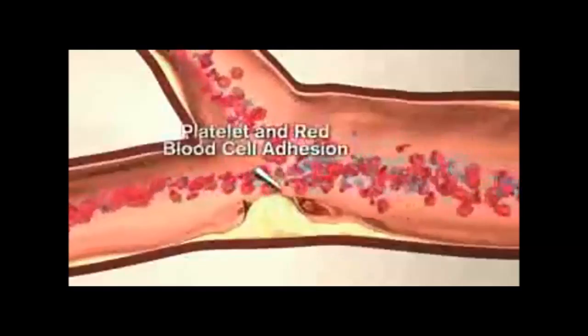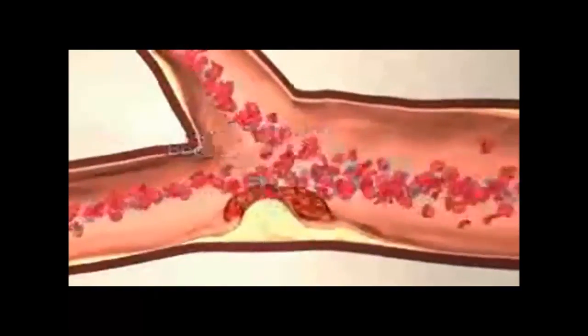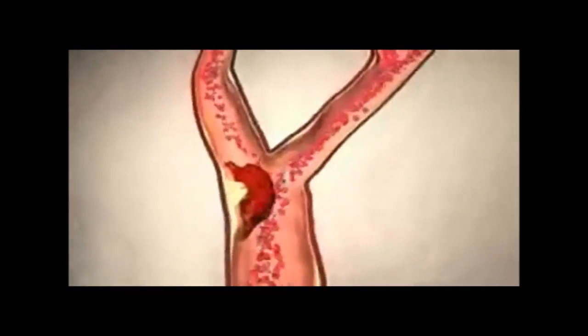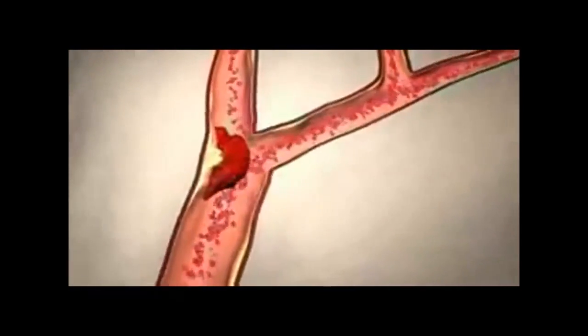Platelets and red blood cells aggregate at the site of injury, causing further narrowing of the artery. This impedes blood flow even more and causes turbulence in the artery. It also increases the likelihood of thrombus formation.